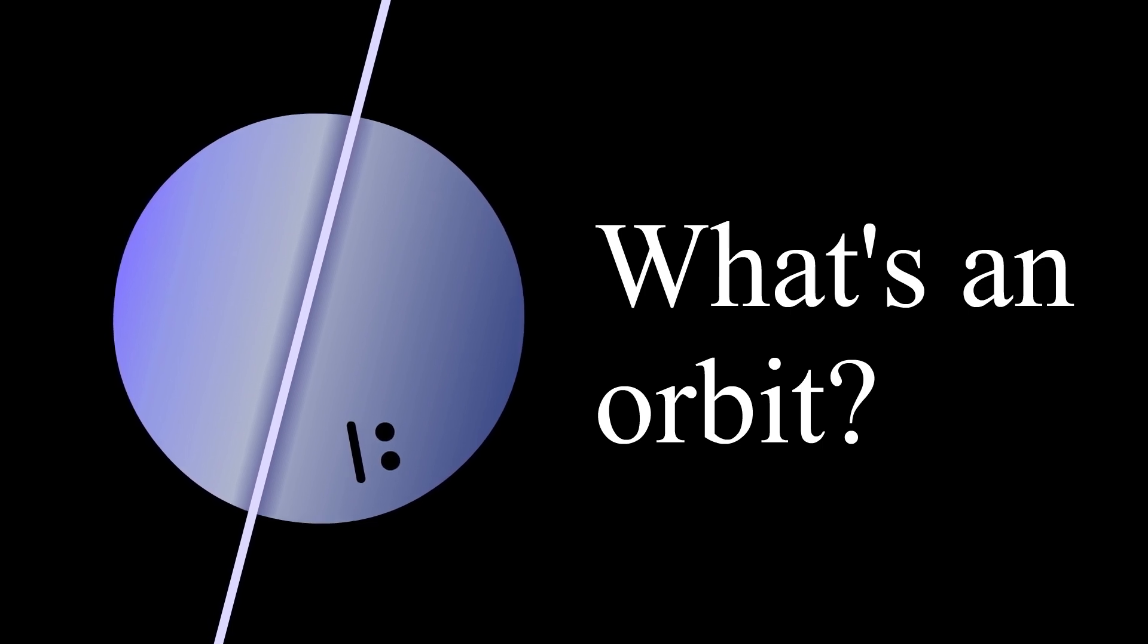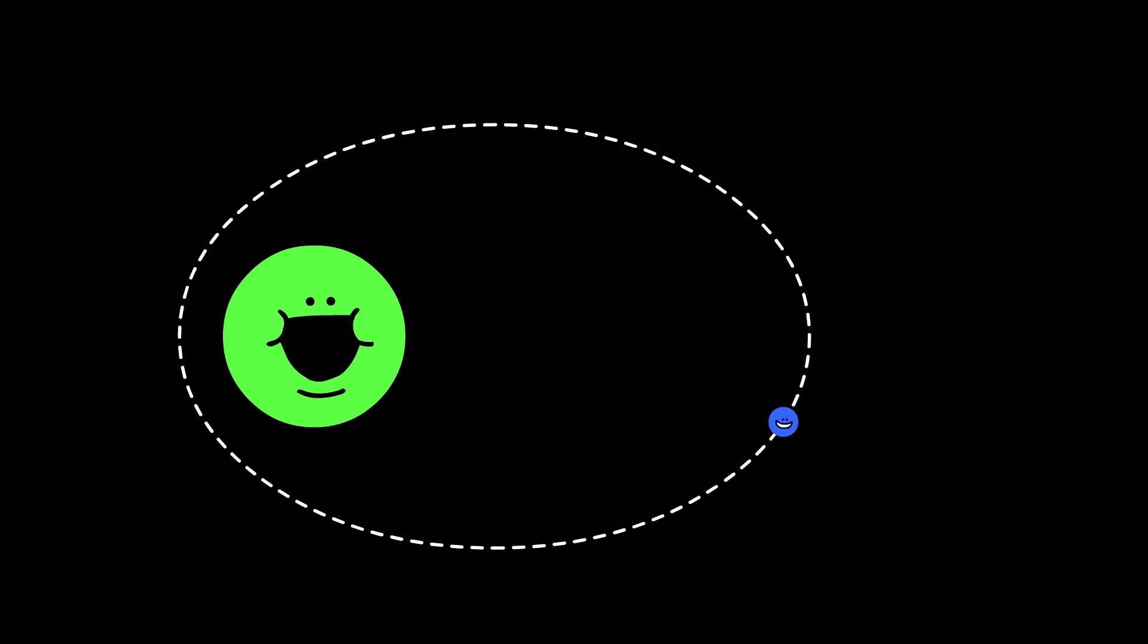What's an orbit? An orbit is a curved path that an object follows around a body, be it a planet, moon, or whatever, in space. There's lots of different types of orbits.